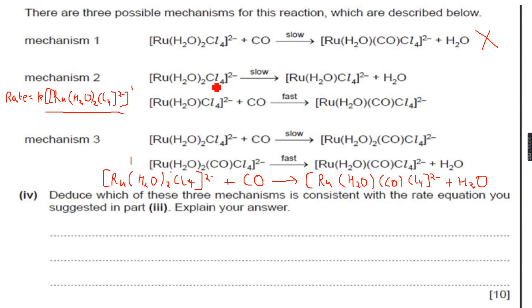In mechanism 2, the slowest step only contains the complex ion, and it is slow, yes, this is possible.